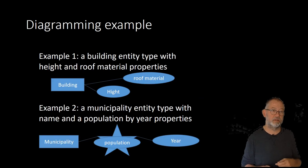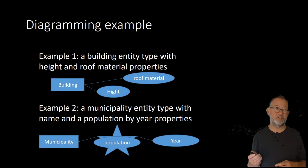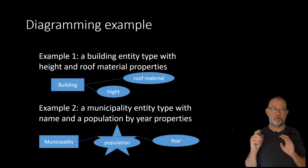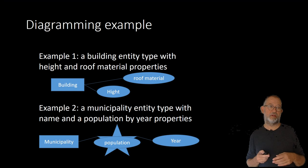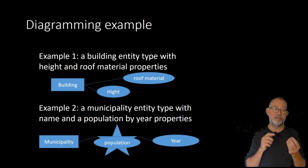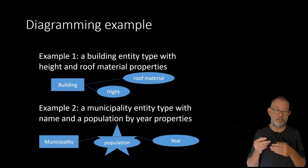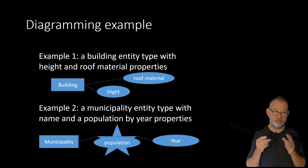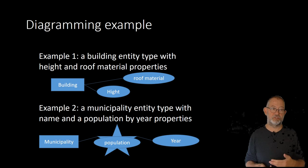Looking at some examples of this diagramming: we could have a building as our entity type, with properties describing height and roof material — the building as a square connected to two ovals representing roof material and height. Or, for municipalities, we will have a municipality as our entity type, and each municipality has a dimensional property of population — giving how many people live in that municipality for each year. That year is the dimension of the dimensional property 'population.'